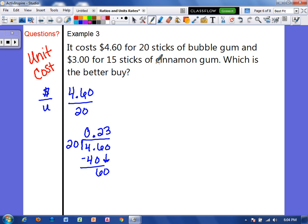Now for the cinnamon gum, we want to take the money divided by the unit. So it costs $3.00 for 15 sticks of gum. So let's divide that.